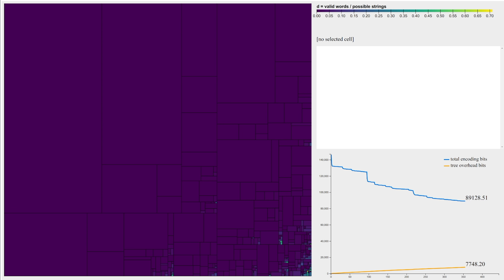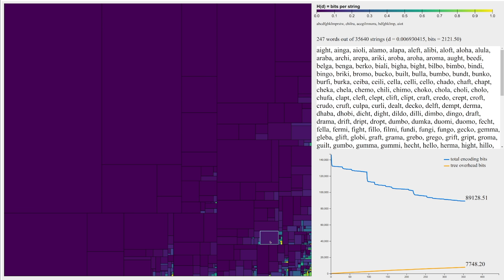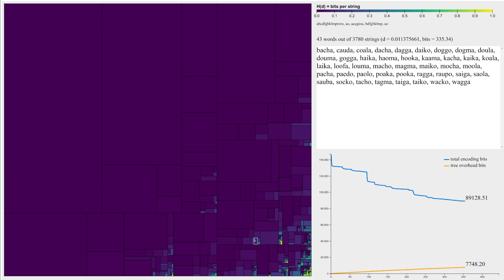Coloring by density is easy to understand, but coloring by entropy is more informative because that's directly proportional to the number of bits we need to spend. Now we can explore some of these brightly colored subsets and try to understand how to optimize them better.